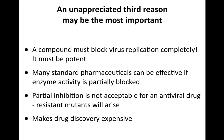Perhaps the most important reason is that a drug designed to inhibit virus infection must block virus replication completely — it must be a potent compound. Unlike other pharmaceuticals where partial blockade is acceptable, virus replication must be fully blocked. Otherwise, resistant mutants will emerge. Virus replication in the presence of an inhibitor is a recipe for getting resistance. This makes antiviral drug discovery very expensive — you search through many compounds and often fail late in the process and have to start over.